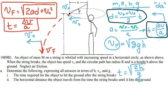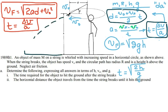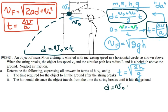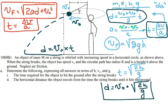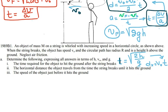For the next part, they ask for the horizontal distance the object travels from the time the string breaks until it hits the ground. The horizontal velocity is v₀ and it stays constant. So the horizontal distance is v₀ times the time. We just found t = √(2h/g), so the distance is x = v₀ · √(2h/g).